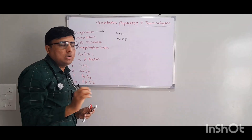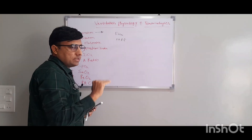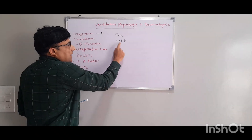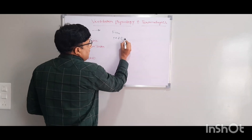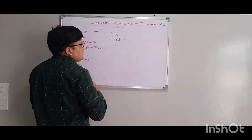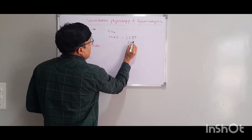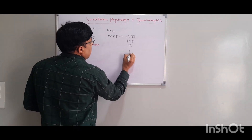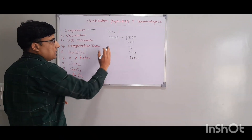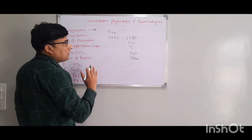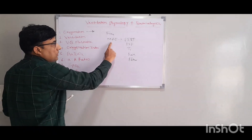FiO2, or fractional inspired oxygen, is something we can control directly. If there is a decrease in oxygen, we can increase FiO2. The second determinant is mean airway pressure. Mean airway pressure depends on PEEP, PIP, inspiratory time, and flow. If we want to increase oxygenation, we have to increase the mean airway pressure.